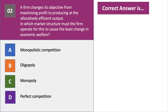Question two: a firm changes its objective from profit maximization to producing at the allocatively efficient output. In which market structure must the firm operate for this to cause the least change in economic welfare? Have a go at question two.